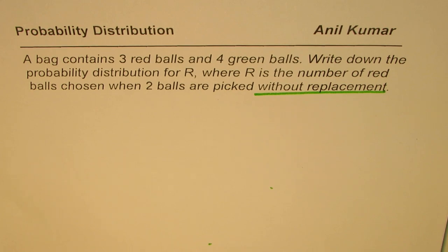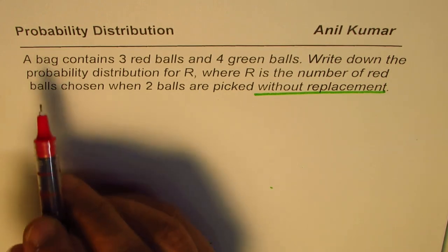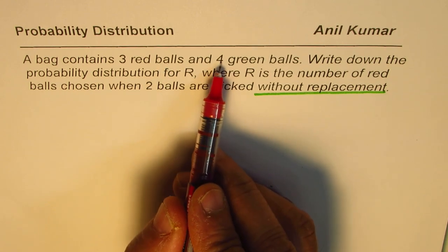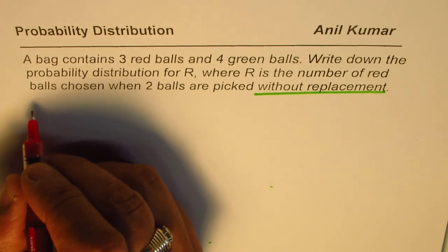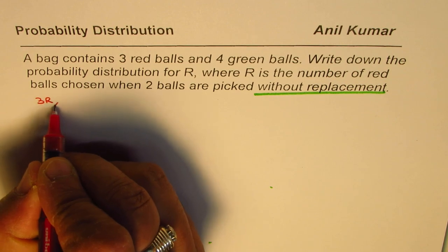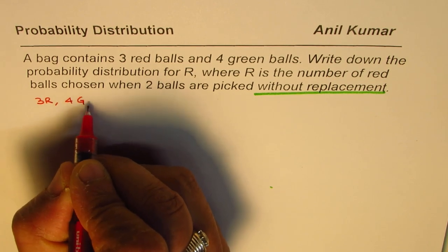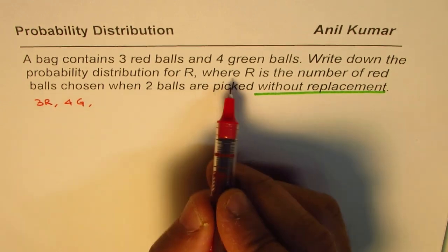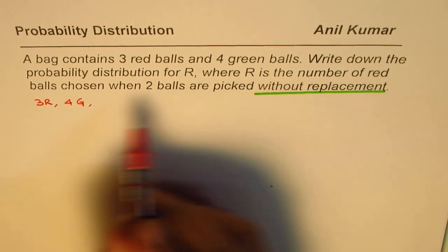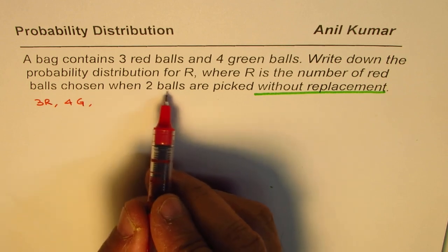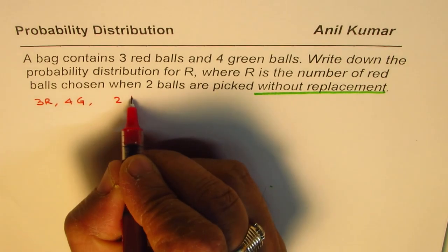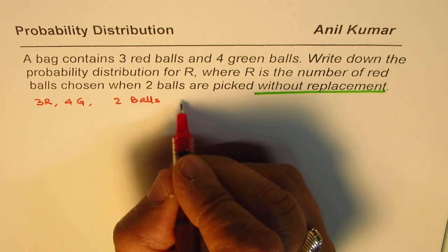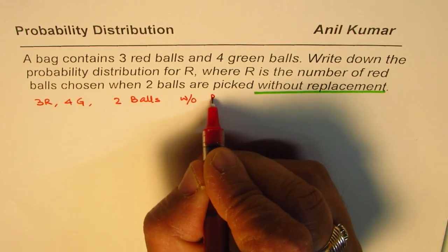Let's see how to solve it. The question is: a bag contains three red balls and four green balls. We have three red balls and four green balls. We want R, the number of red balls chosen when two balls are picked. Two balls are picked without replacement.